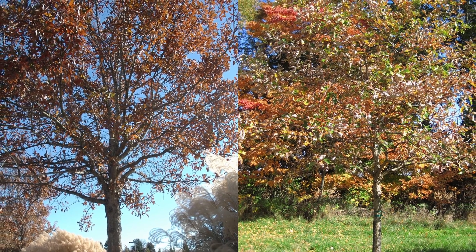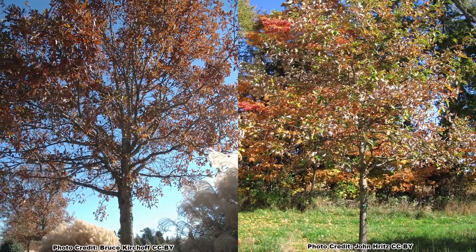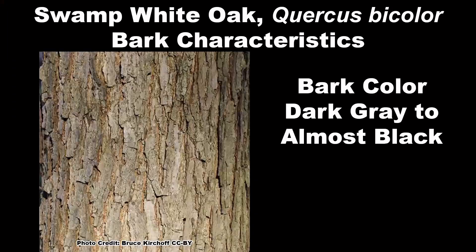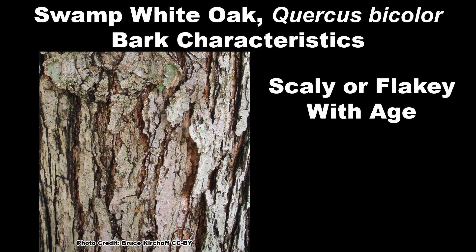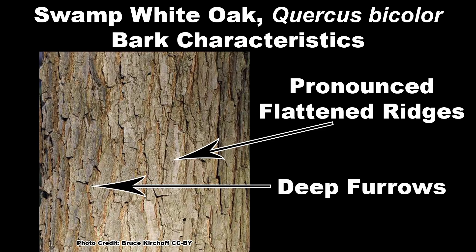Fall color can be variable shades of brown, yellow, and red. Bark is dark gray to almost black, becomes scaly or flaky with age, and has pronounced flattened ridges and deep furrows.